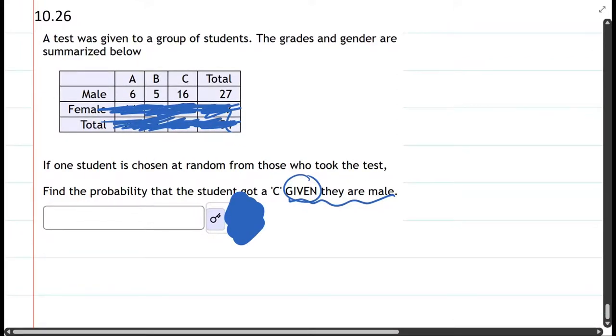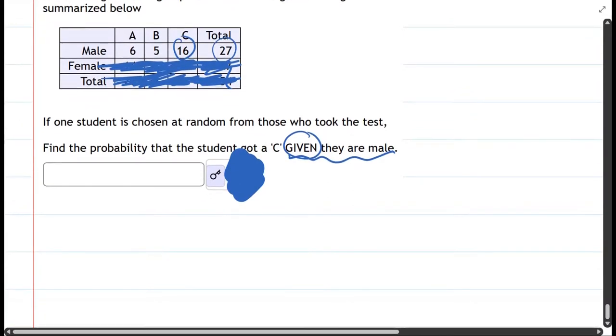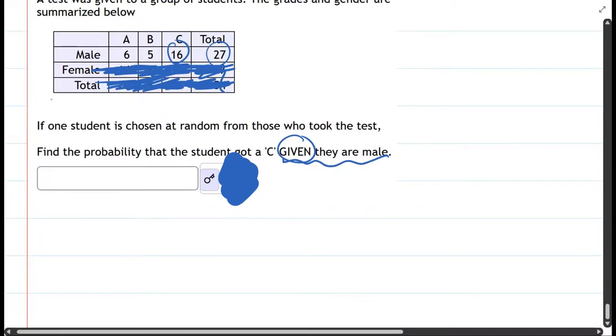Here we have the C students, and here we have all. When I say the C students, that's the male C students, and the 27 is the total male students. So we just have 16 over 27.